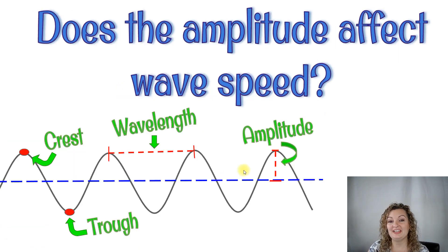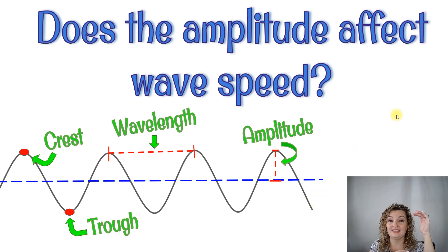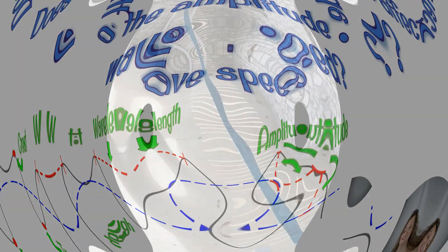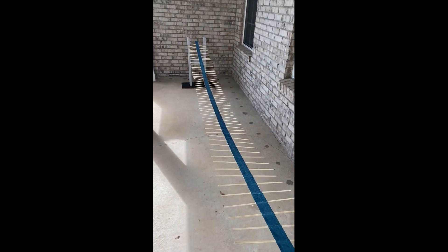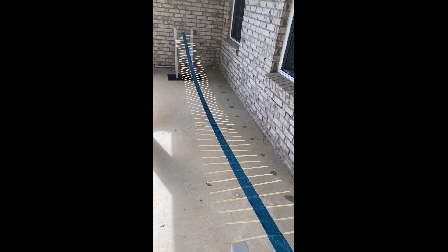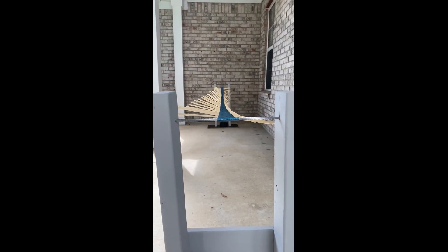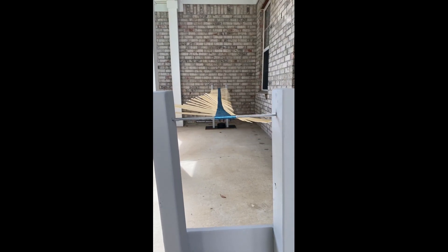So one more question for you guys: does the amplitude affect wave speed? Amplitude is from the crest of the wave to the rest position, or rest to the trough — what we're really talking about is the wave height. For our first trial, I'm creating a small amplitude, and the wave speed comes in at about 0.9 seconds. For our second trial, we're creating a much larger amplitude, and the wave speed comes in at about 0.89 seconds.